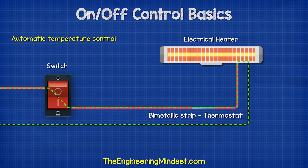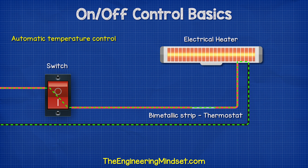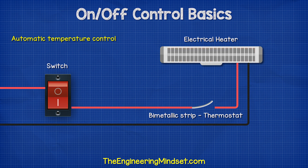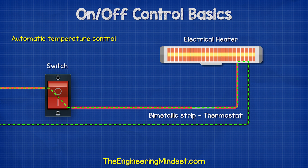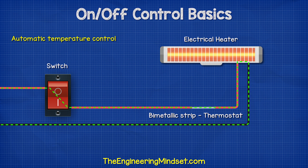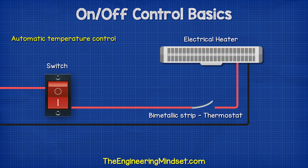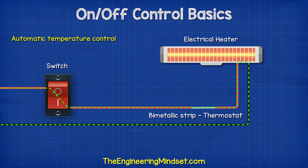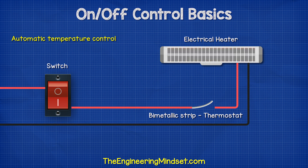We could automate this, for example, with a bimetallic strip which acts as a thermostat. The strip bends as it warms up, and at a certain temperature it will bend enough to disconnect the circuit and turn the heater off. As it cools down, it completes the circuit again and the heating turns on automatically.